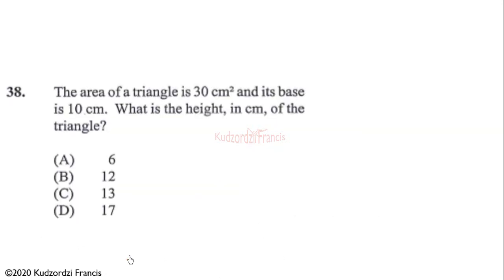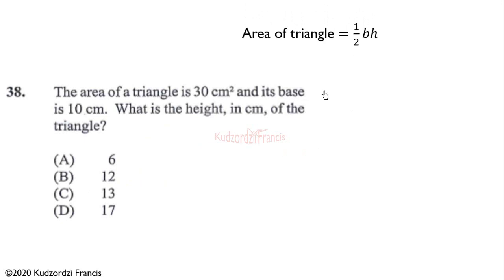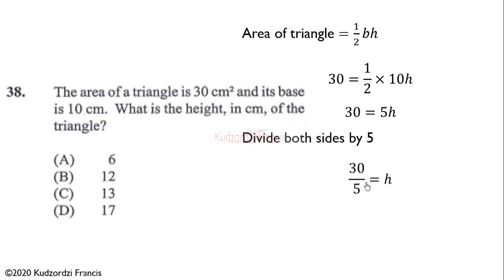Question 38: the area of a triangle is 30 square centimeters and its base is 10 centimeters. What is the height in centimeters? The area of a triangle is half base times height. Substituting: 30 = (1/2) × 10 × h, so 30 = 5h. Dividing both sides by 5 gives the height equal to 6 centimeters.